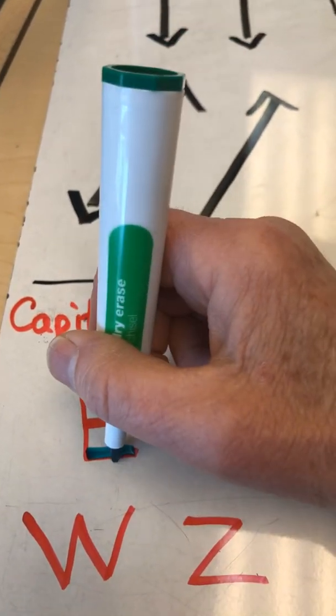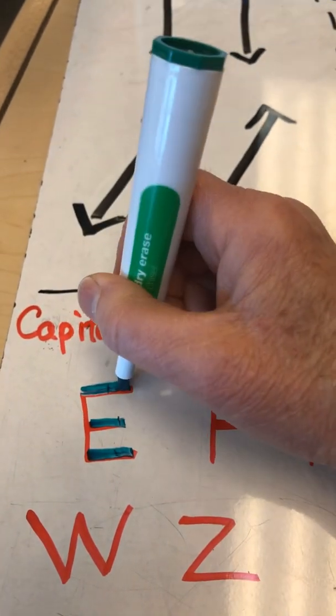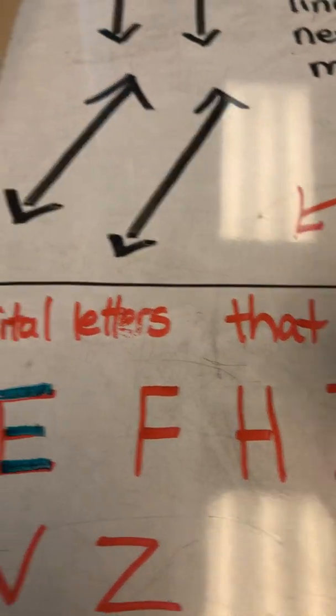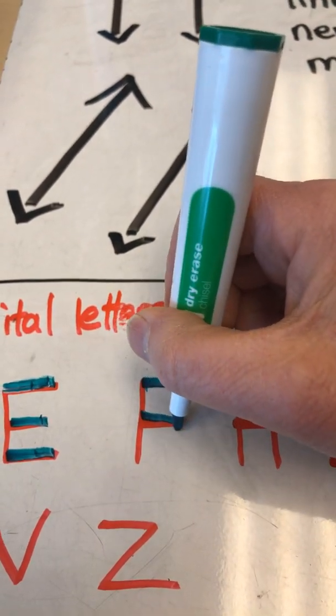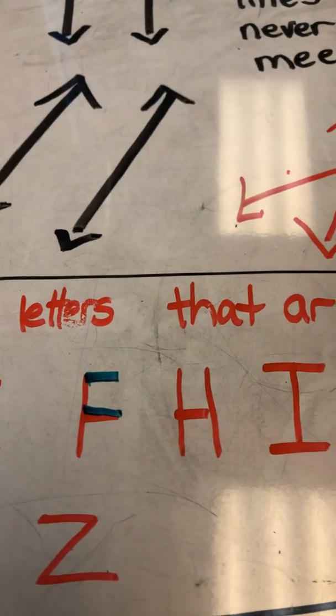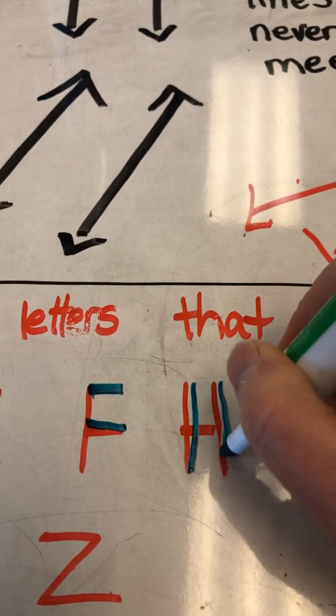These two lines are parallel, or this one can be parallel with the top line. On the letter F the horizontal lines are parallel. On the H the vertical lines are parallel.